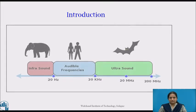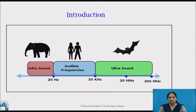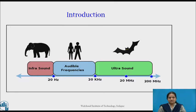The word ultrasound is a combination of the words 'ultra', which means beyond, and 'sonic', which means audible sound. Sound waves of frequencies ranging from 20 Hz to 20 kHz are audible to the human ear. Waves of frequencies beyond 20 kHz are called ultrasonic waves. Human ear cannot sense ultrasonic sounds, but dogs and other animals have the ability to hear high frequency sounds.